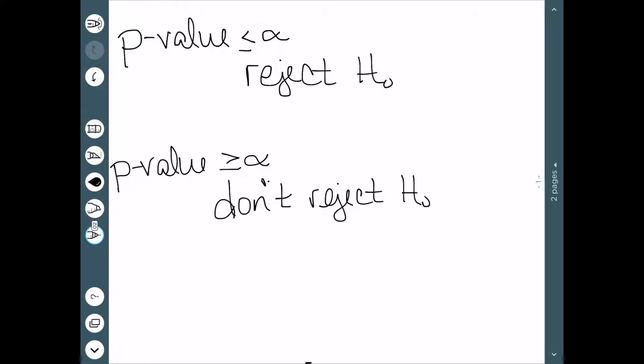In general, if our p-value is less than or equal to alpha, then we're going to reject our null hypothesis. And if it's greater than or equal to alpha, we don't reject our null hypothesis. You'll notice both of these contain the equal to case. Essentially, if the p-value is exactly alpha, we run into some problems. So we really try to avoid that situation.